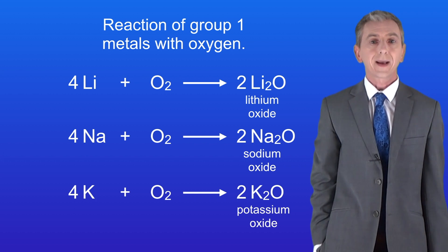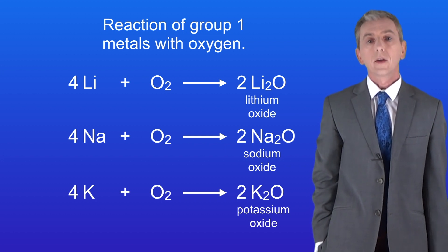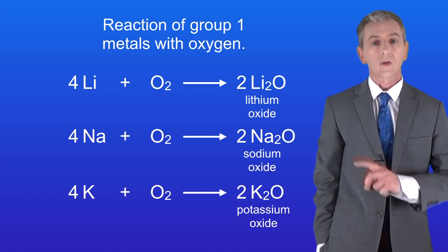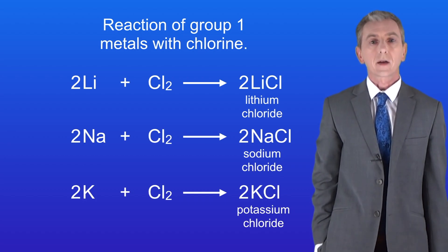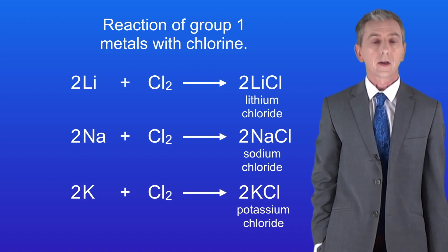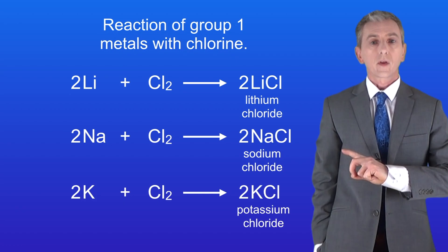We've already seen that group 1 metals react rapidly with oxygen to form the metal oxide, and we can see the equations for these reactions here. Group 1 metals also react rapidly with chlorine to form the metal chloride, and here are the equations for those reactions.